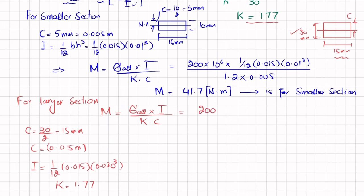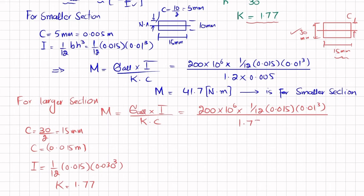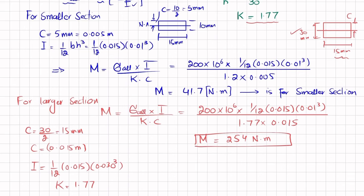With σ_allowable = 200 × 10⁶ Pa, I = (1/12) × 0.015 × (0.030)³, K = 1.77, and C = 0.015 m, substituting gives M = 254 N·m. This is the allowable moment for the larger section.